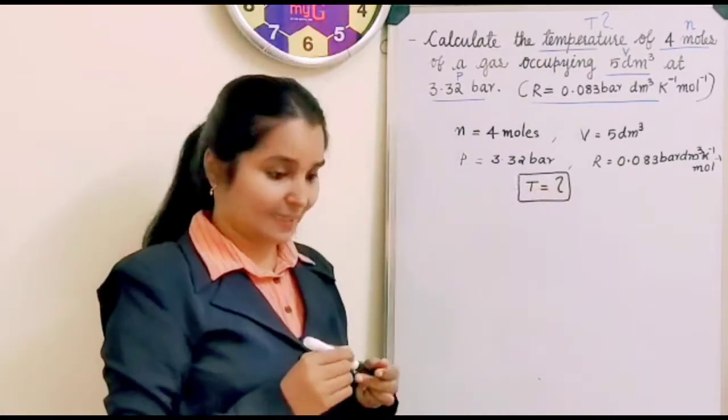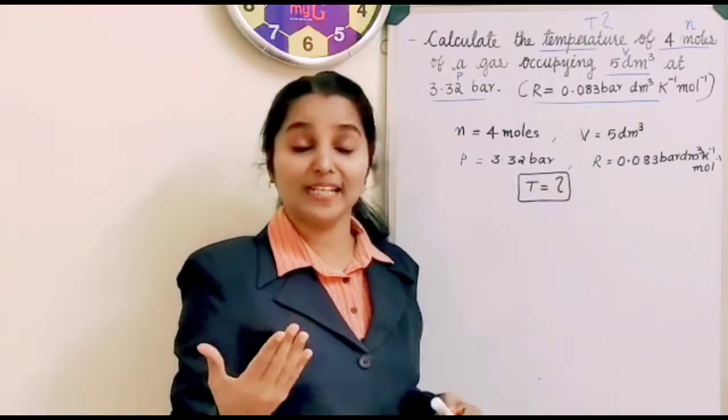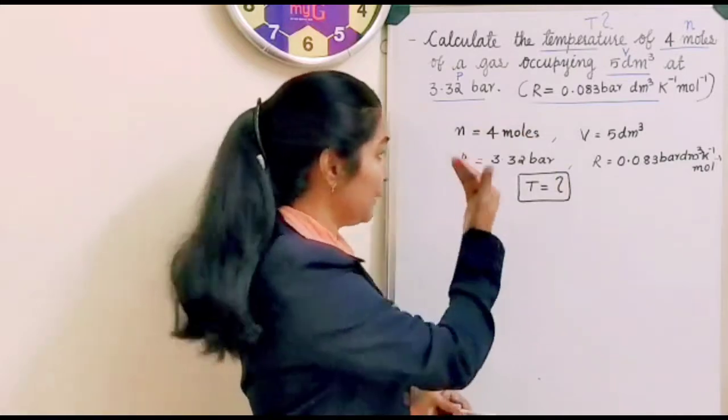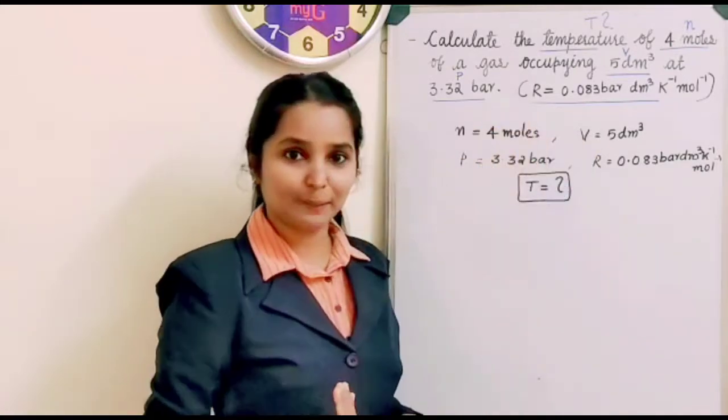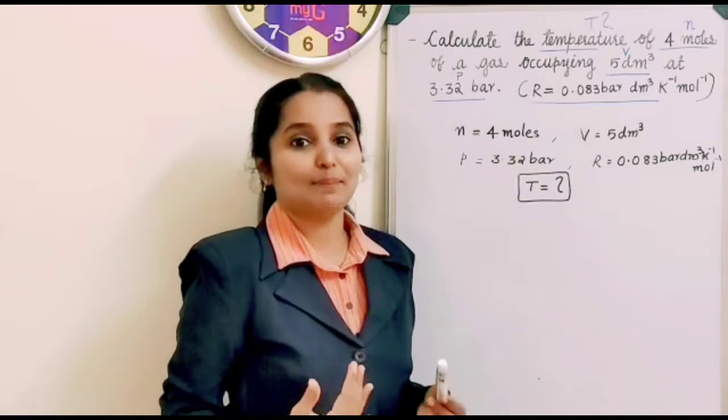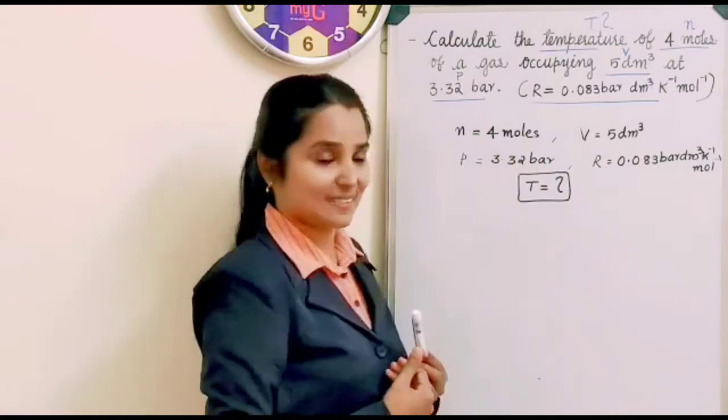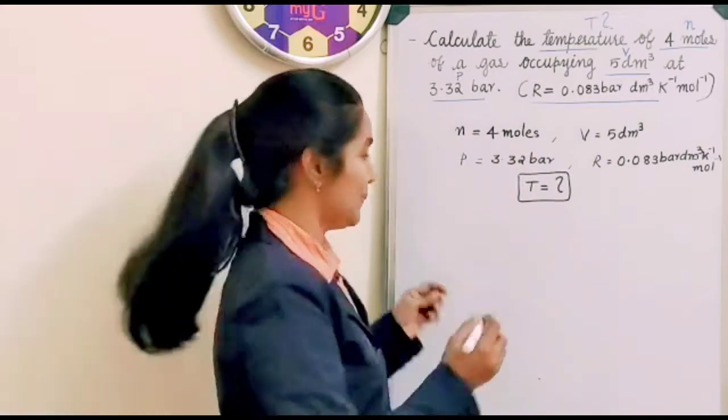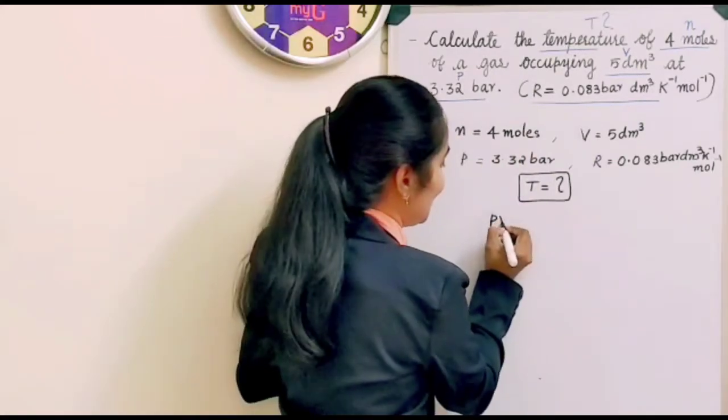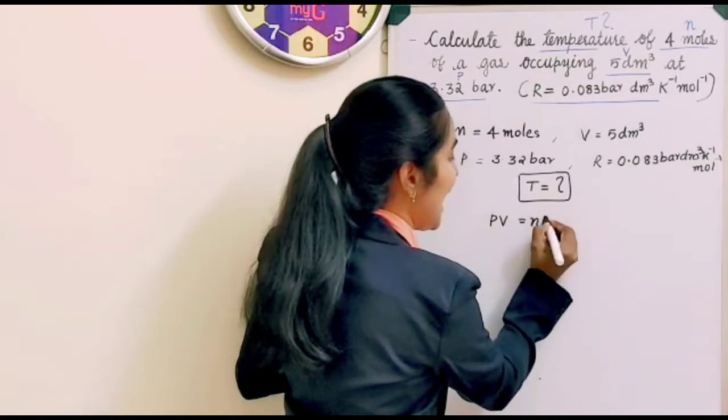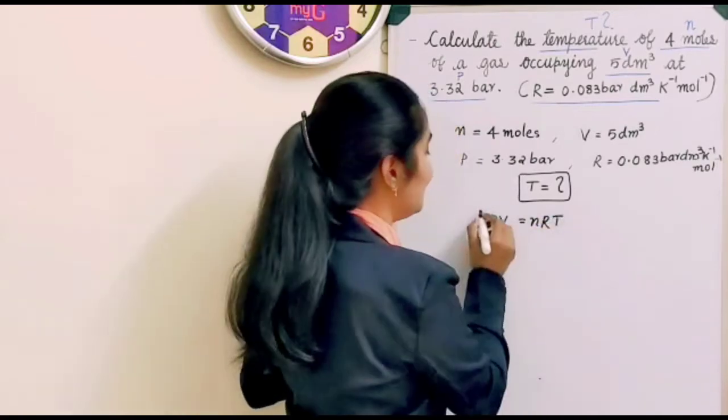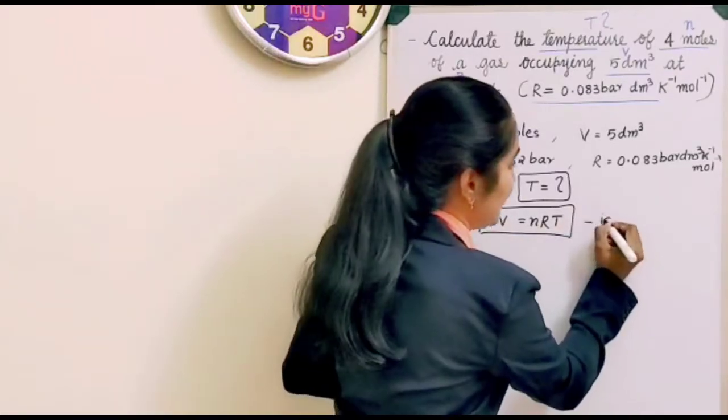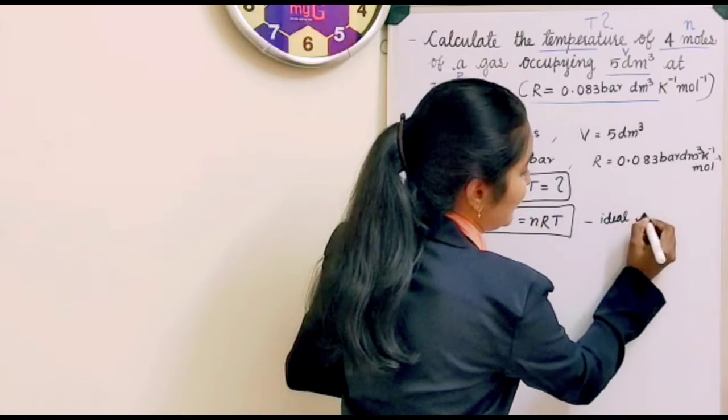Now let's think about an equation that relates all this. We have N here, V volume here, P pressure here, and R gas constant here. So we have already learnt a particular equation relating all this including temperature. Which is that equation? Ideal gas equation. Right? PV is equal to nRT. We have learnt this equation. This is known as ideal gas equation.